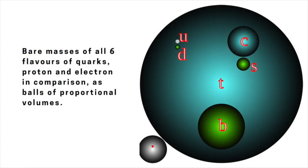Quarks come in six flavours, in increasing order of mass: up, down, charm, strange, top and bottom. And they also come in three colours: red, green and blue. Now, obviously, these are just cute names that physicists have come up with.